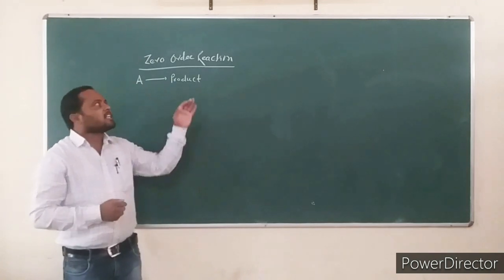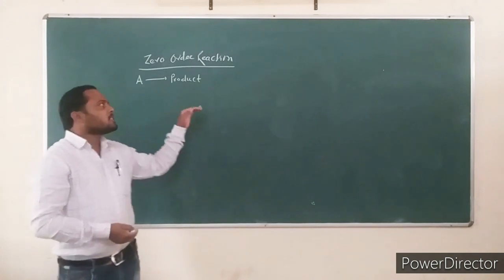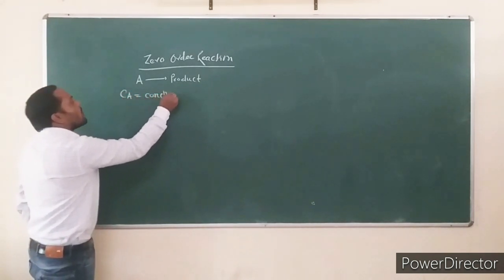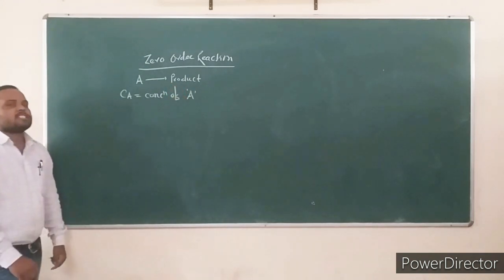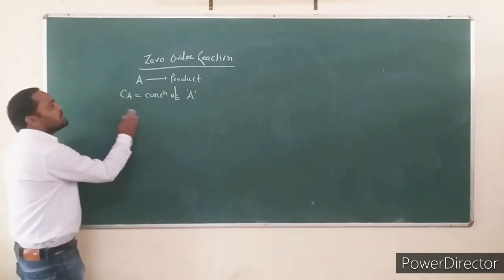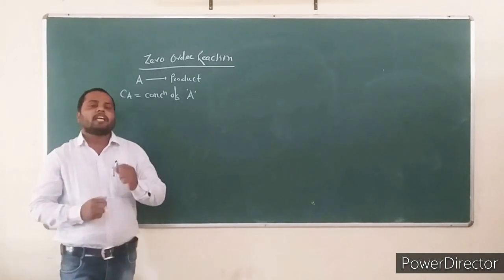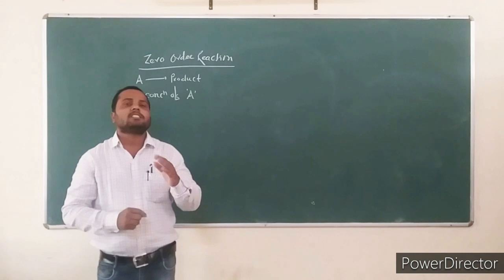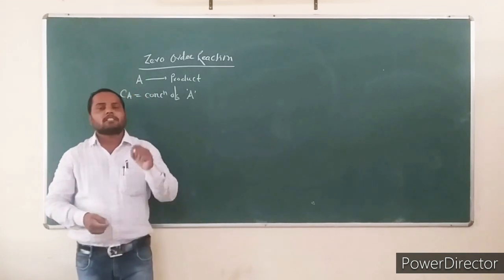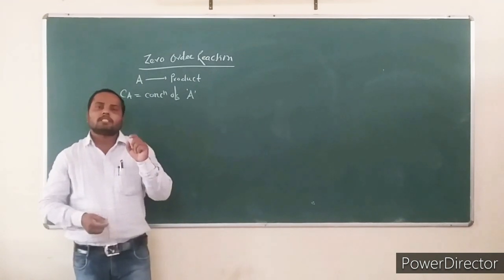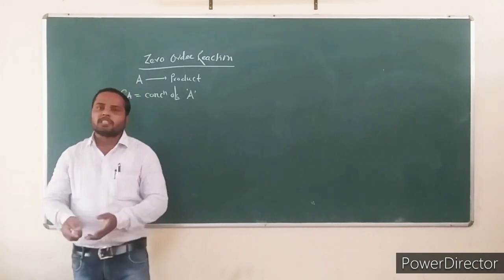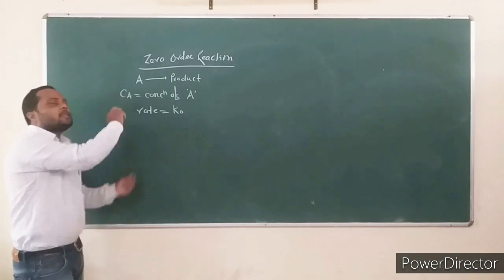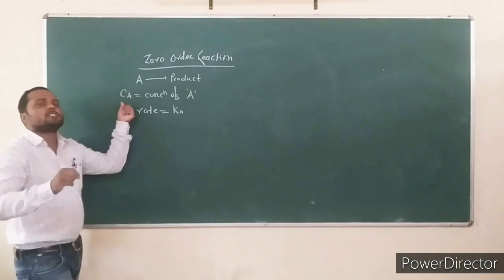Consider the zero order reaction: A is converted into the product. If CA is the concentration of reactant A, then for the zero order reaction the rate constant remains constant. The rate of reaction remains constant and is independent of the concentration of the reactant. It does not change with time. The rate of zero order reaction is equal to K0, and it is independent of the concentration of reactant A.